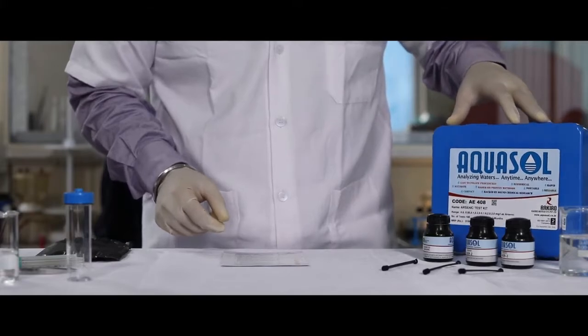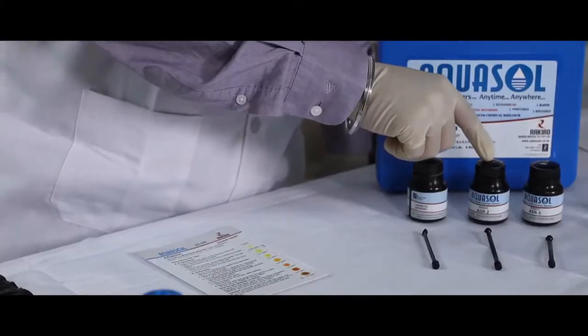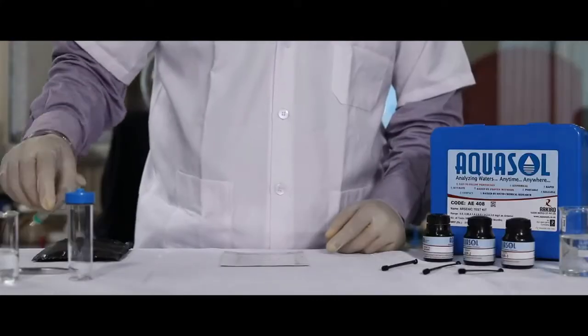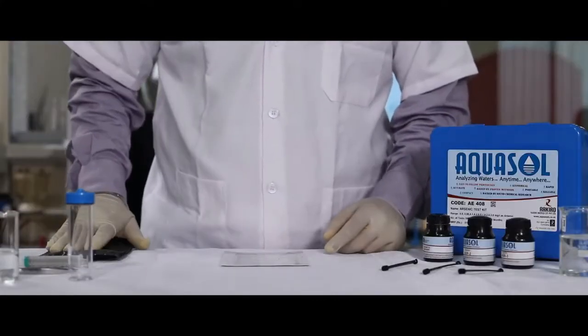This is an arsenic test kit consisting of ASR 1, 2, 3 along with a test bottle, syringe, test paper, and procedure card.